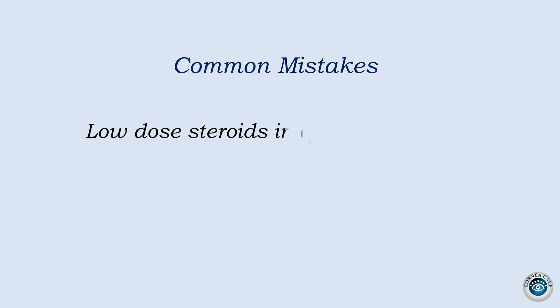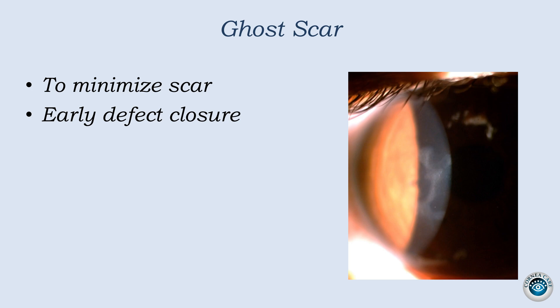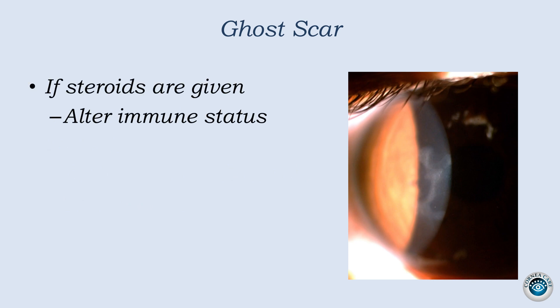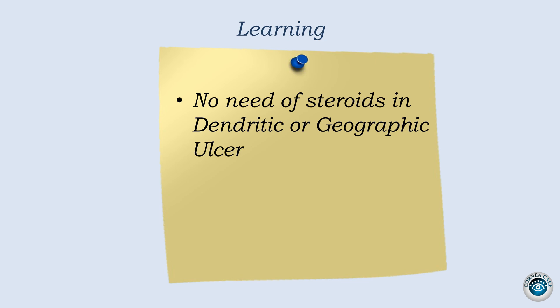Now, some common mistakes I've noticed frequently in referred cases. Many times these patients are started on low-dose steroids. I presume this urge comes because doctors want to prevent ghost scars which occasionally develop — these are the result of mild anterior stromal inflammation underneath the defect. Can we prevent these scars? Actually, early defect closure is what helps. Low-dose steroid does not help in early closure of dendrite; rather, it has a huge potential to cause damage. Virus is residing in the epithelium and the body was getting rid of it using its own immune mechanism with the help of antivirals. When we give steroids, we alter the immune defenses of the cornea, letting the virus stay longer, and even allowing virus or antigens to go deeper in the stroma, leading to increased chances of stromal disease. So we should not give steroids in pure epithelial disease.